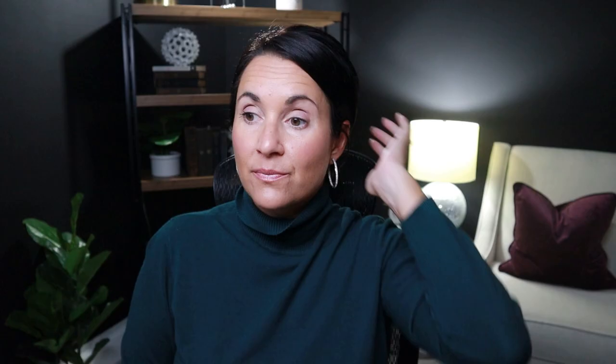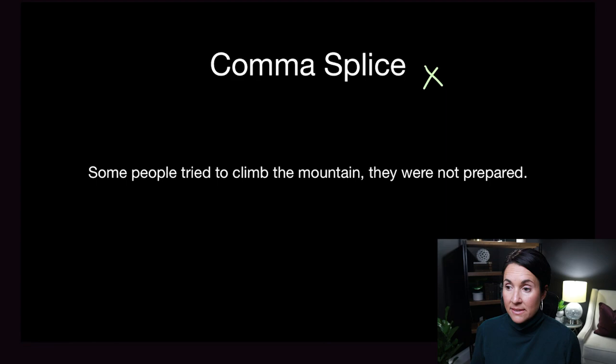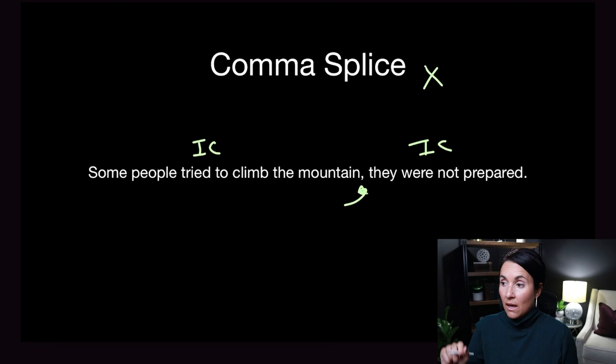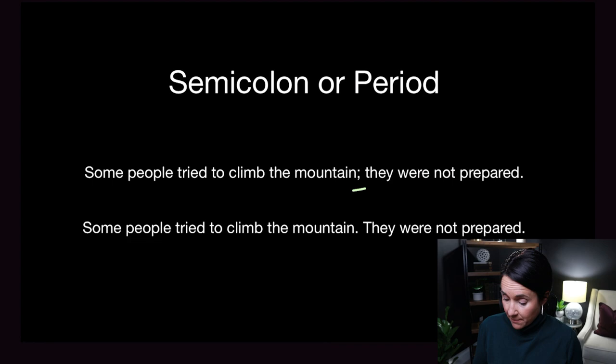Now let's try another comma splice. We have: 'Some people tried to climb the mountain, they were not prepared.' Again, the comma here is wrong because we have two independent clauses — 'some people tried to climb the mountain' and 'they were not prepared.' The comma alone is too weak to separate them. A simple fix would be to use a semicolon, or to put a period and capitalize 'they.' Both of those work.